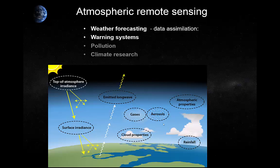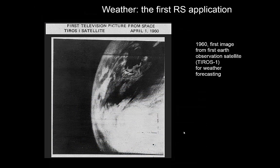In here you see things like gases, aerosols, cloud properties, and rain — all these things interact with both the Sun's radiation and the emitted radiation from the land. We can use that to work out the state of the atmosphere and use that information in predicting weather.